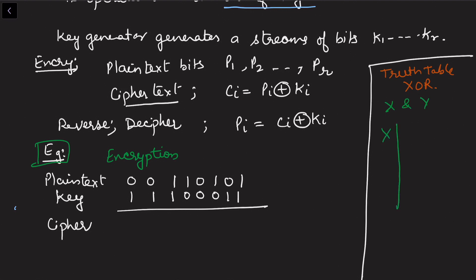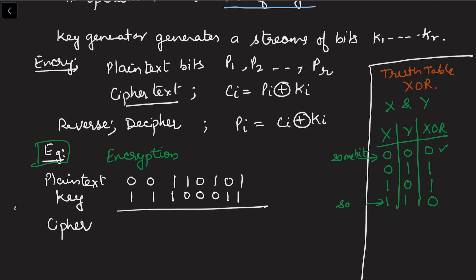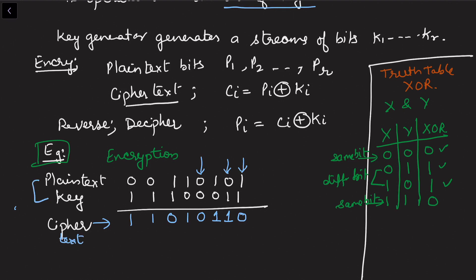In the XOR truth table: 0 XOR 0 = 0, 0 XOR 1 = 1, 1 XOR 0 = 1, 1 XOR 1 = 0. Same bits give 0; different bits give 1. Applying this to our example: 1 XOR 1 = 0, 0 XOR 1 = 1, 0 XOR 0 = 0, and so on, giving us the cipher text.